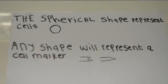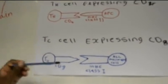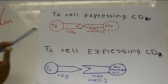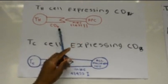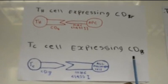I'm going to concentrate on the TH and TC cells. There are many cells, but I'm going to concentrate on TH and TC. The TH cell expresses CD4, as illustrated here. The TC cell expresses CD8.